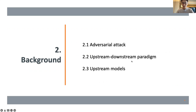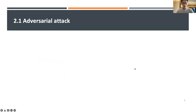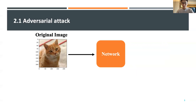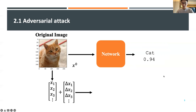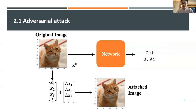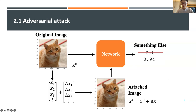Let's look at what adversarial attack is. In this figure, we have a well-trained image classification model. Given a picture of a cat, the model predicts 'cat' with high confidence. However, attackers can find some small adversarial noise and add it to the original image to get an attacked image. The attacked image looks very similar to the original one from a human's perspective, but the network will predict something else. Using such adversarial noise to generate adversarial samples to attack machine learning models is called an adversarial attack.